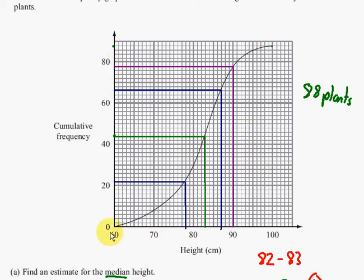Now plants that are up to 90 centimeters tall, there are 78 of those plants. So 78 plants are up to 90 centimeters tall.